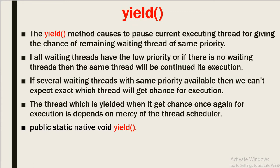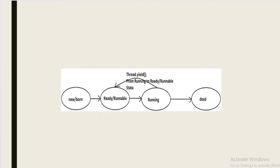The yield method causes the current executing thread to pause, giving a chance to remaining waiting threads of the same priority. But if all waiting threads have lower priority, or if there is no waiting thread, then the same thread will continue its execution. If several waiting threads with same priority are available, we cannot predict exactly which thread will get a chance of execution. The thread which is yielded — when it gets a chance again for execution — depends on the thread scheduler.